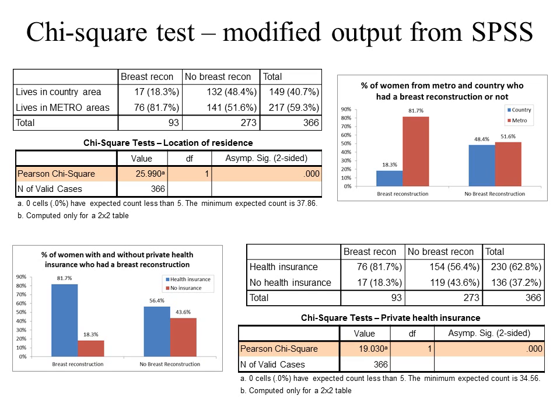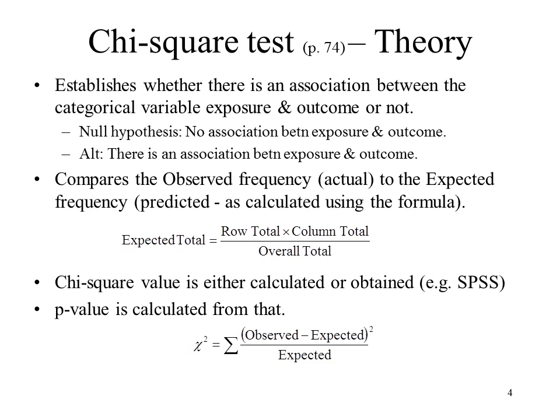A chi-squared test compares two categorical variables. If you're interested, here's the theory behind a chi-squared test. A chi-squared test establishes whether there's an association between the categorical variable exposure and outcome or not.